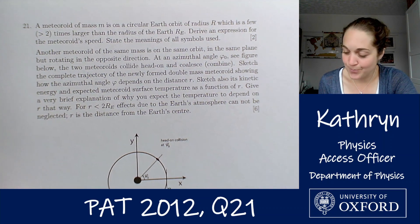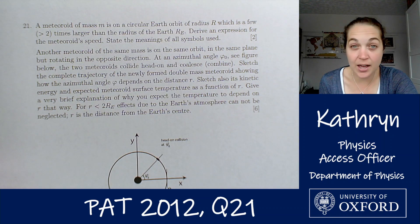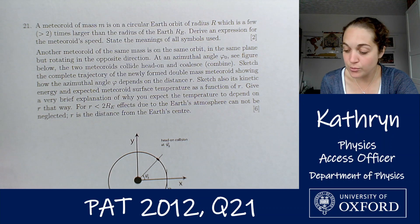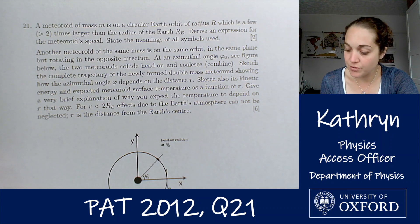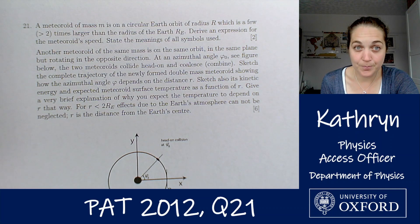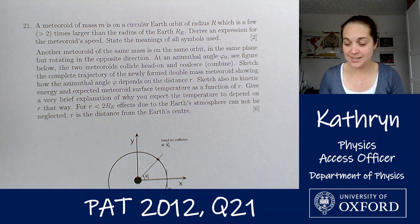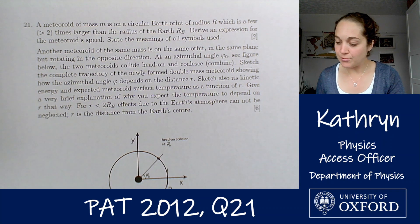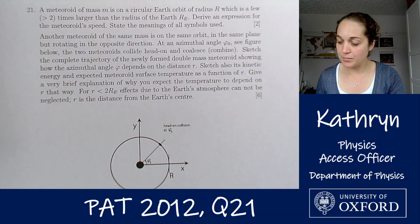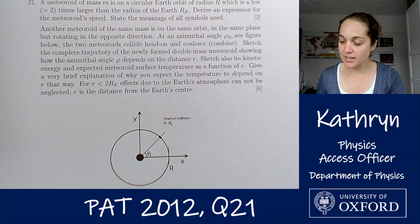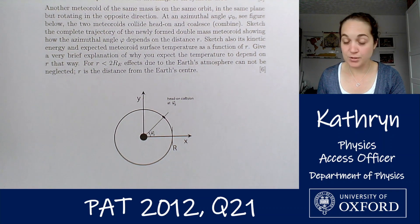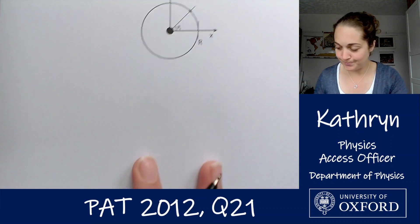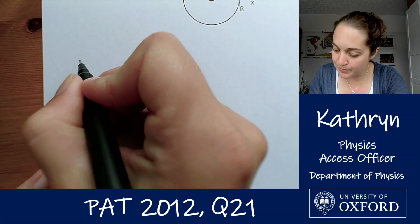Question 21 says: a meteoroid of mass m is on a circular Earth orbit of radius r, which is more than two times larger than the radius of the Earth, rₑ. Derive an expression for the meteoroid's speed. State the meanings of all symbols used. Let's have a look at this first part, then we'll look at the second part.